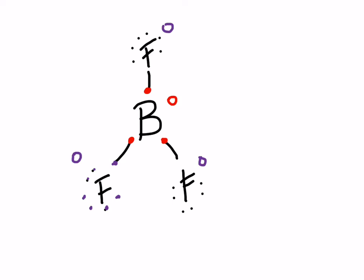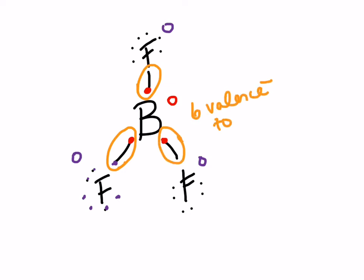This is actually an exception to the octet rule. Normally things bond to get eight valence electrons, but if you count each bond as two, boron has two, four, six valence electrons around it total — only six, not eight. That breaks the octet rule. For boron and beryllium — things with two or three valence electrons — this is often the case because it reduces the formal charge.